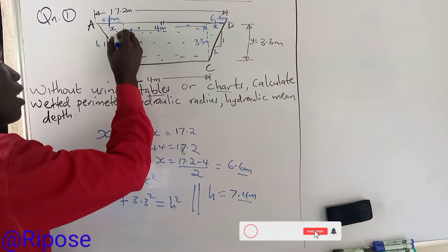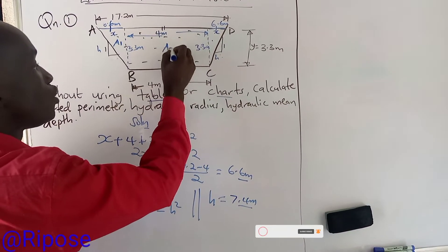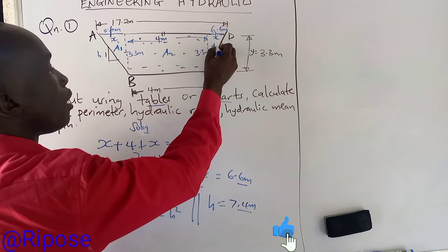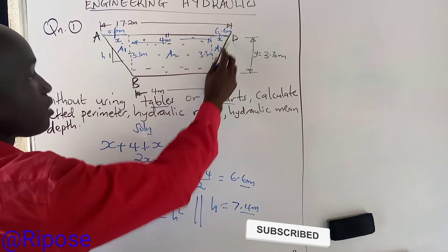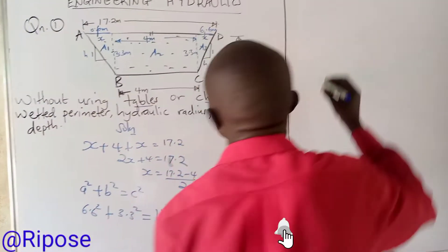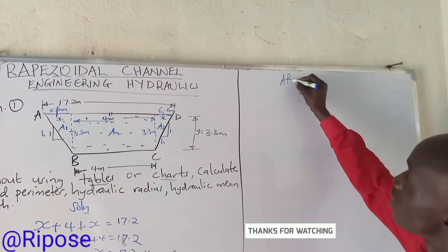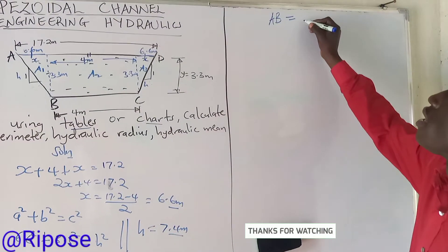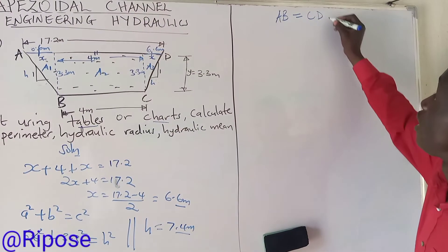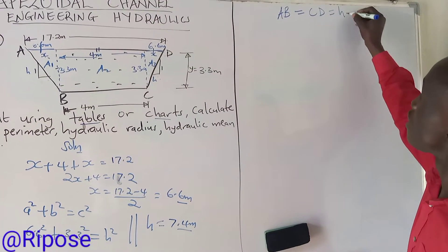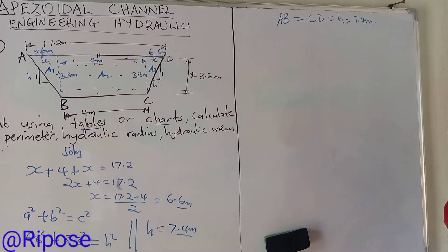We can divide the channel into areas: a rectangle A2 and two triangles A1 and A3. From this, we find that AB equals CD — they are the same triangle on each side — and AB equals CD equals h, which is 7.4 meters.